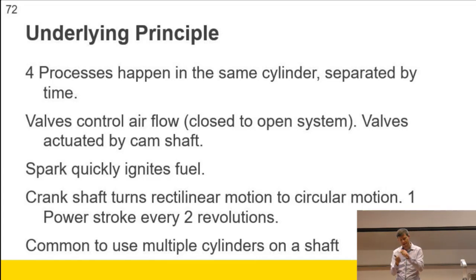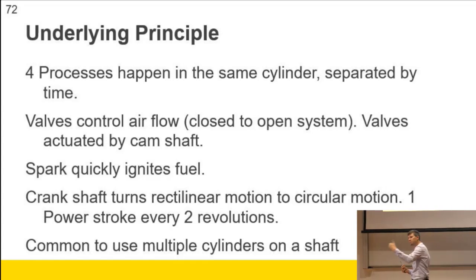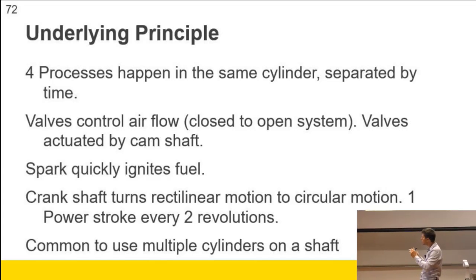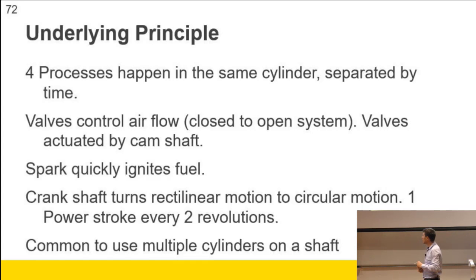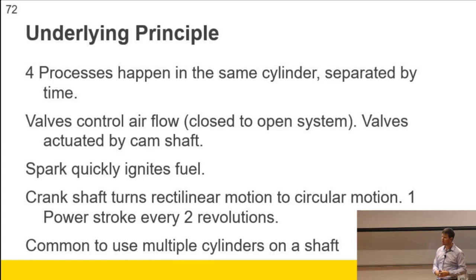The Otto cycle is based on the idea that you have a cylinder where four processes occur in the same space, separated by time — one thing happens, then another, then another. That's different from a turbine engine on an aircraft, where you've got multiple different components — a compressor, a combustion chamber, a turbine — displaced by distance, all happening at the same time. The Otto cycle is modeled as a closed system while the process is taking place, whereas a gas turbine engine is modeled as a steady-state open flow system. The spark quickly ignites the fuel, and you get one power stroke for every two revolutions of the shaft.